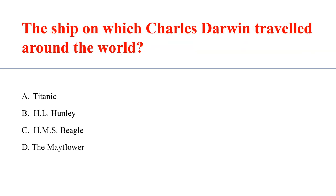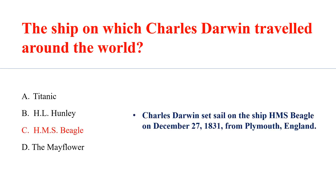The ship on which Charles Darwin traveled around the world was the HMS Beagle. He departed on the HMS Beagle on December 27, 1831, from Plymouth, England.